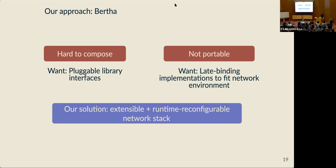My answer to these two challenges is an extensible and runtime reconfigurable networking stack that we call Bertha. We make it extensible by allowing authors of communication libraries to plug in their library's functionality into the network stack, instead of having to wrap arbitrary other libraries. The key idea is that the stack is going to be runtime reconfigurable — it decides at runtime, specifically when establishing a connection, which implementation of each network feature the connection will use, and ensures that decision is compatible with the other connection participants.